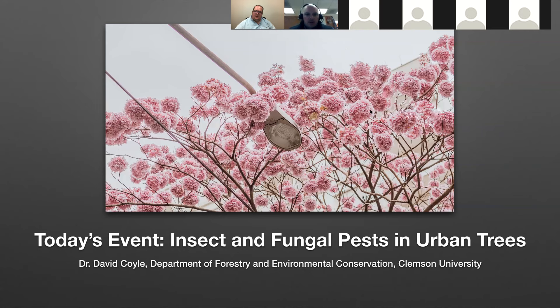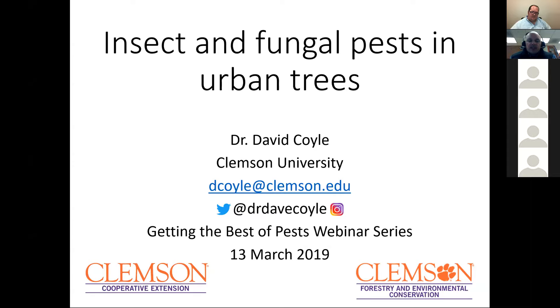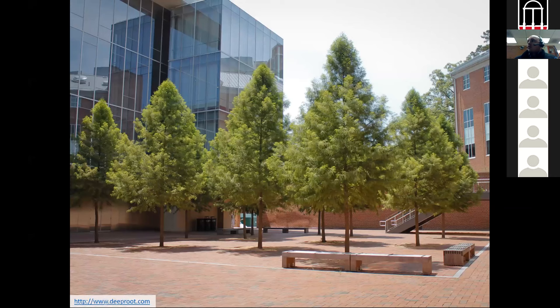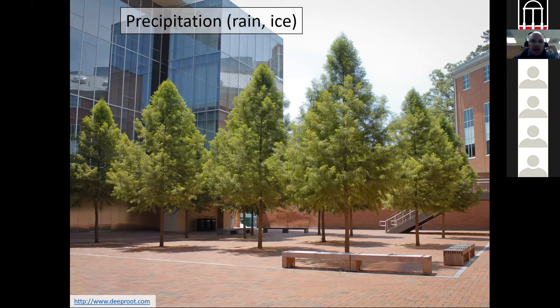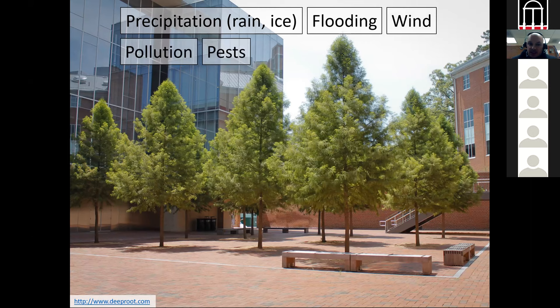Thank you, Bodhi, and thanks everyone for having me. So this morning, we're going to talk about insect and fungal pests in urban trees. The first thing to remember about urban trees is that they deal with a lot of stuff. They've got precipitation coming, whether that's rain or ice. They could be flooded, depending on how they're planted. They've got wind, sometimes really whipping between buildings. There's pollution, differences in air quality in an urban setting versus a natural setting. And there's pests everywhere. Where there is a tree to eat, a pest will find it.